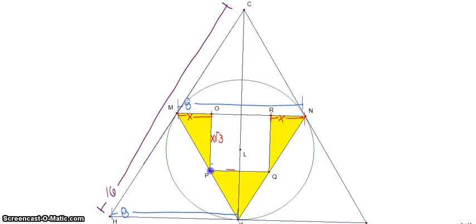Since this is a square, that means that PQ is equal to X root 3, OR is equal to X root 3, and so is RQ.